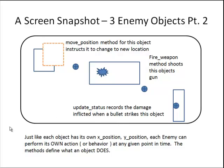Before I move on, I want to reiterate that the variables describe what the object is, and the methods are what the object does. The two components are very related. Obviously, the move position code takes the current X and Y position as input and changes their values so the enemy is drawn in a new location.